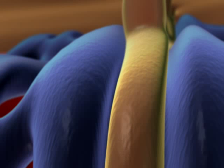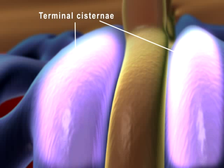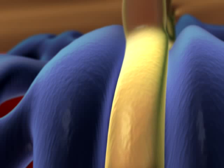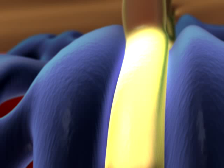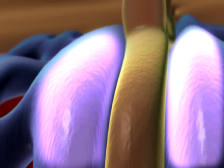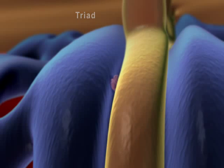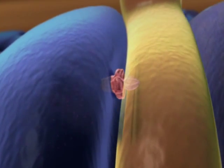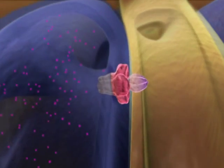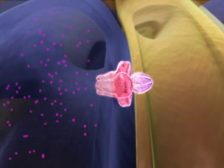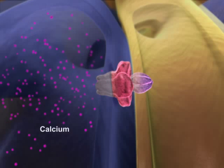Where it abuts the T-tubule, the SR forms sac-like bulges called terminal cisternae. One portion of a T-tubule plus two adjacent terminal cisternae is known as a triad. The membranes of the T-tubule and terminal cisternae are linked by a series of proteins that control calcium release.